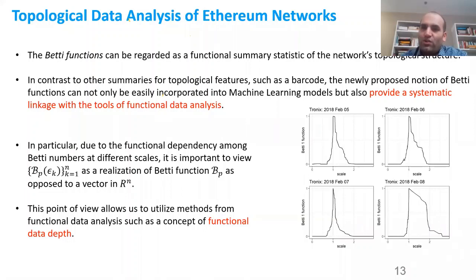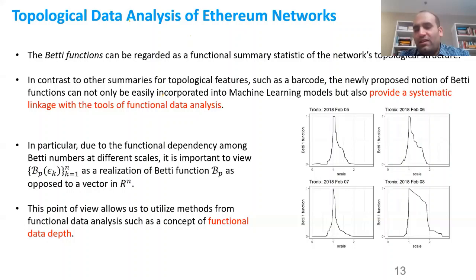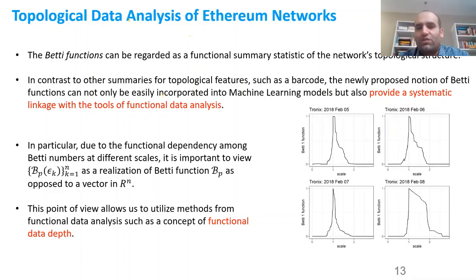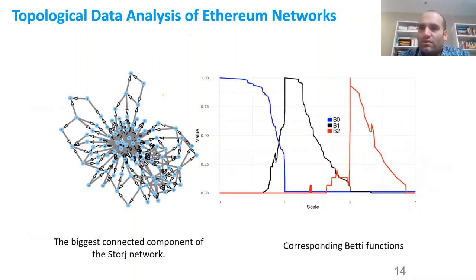In this figure on the right, I'm showing four Betti 1 functions from the Stronix network on four different days: February 5, 6, 7, and 8. You will see that day 8, February 8, has a very different-looking Betti 1 function. Once we look at Betti 1 functions this way, we can utilize methods from functional data analysis. For example, we can take functional data depth and ask: is this Betti function of February 8 very different from the rest? It turns out this is possible.